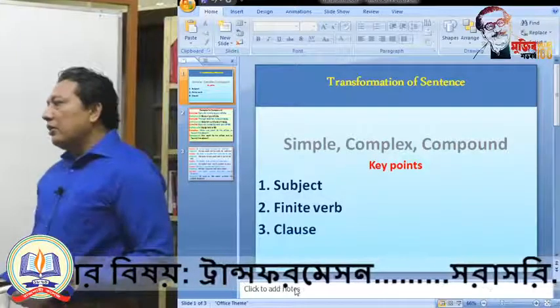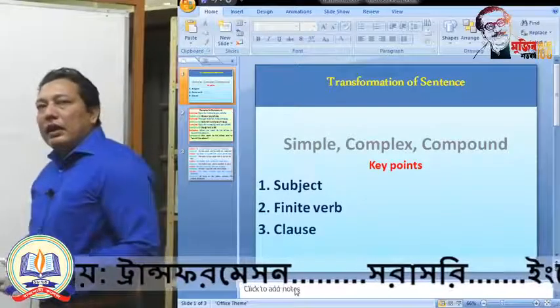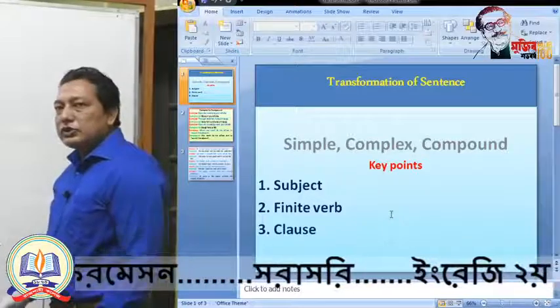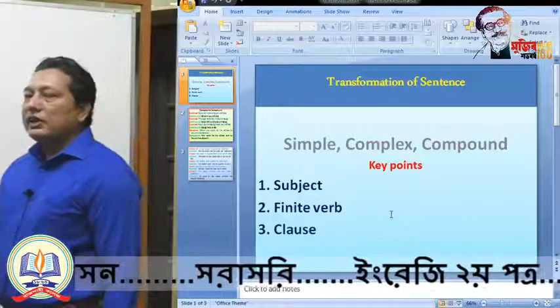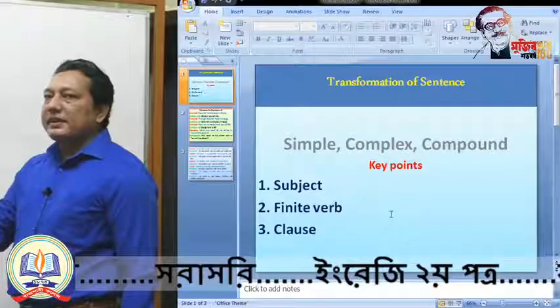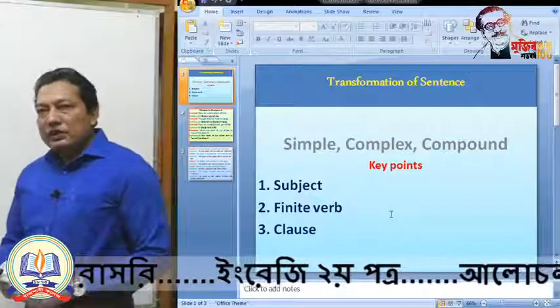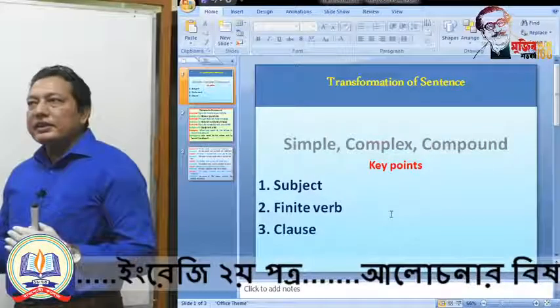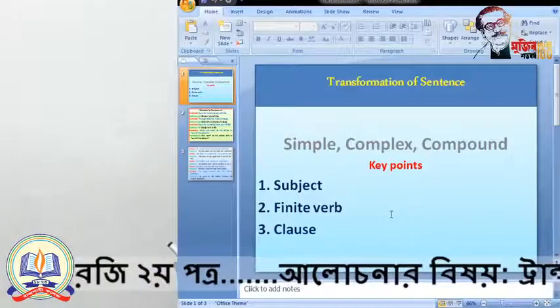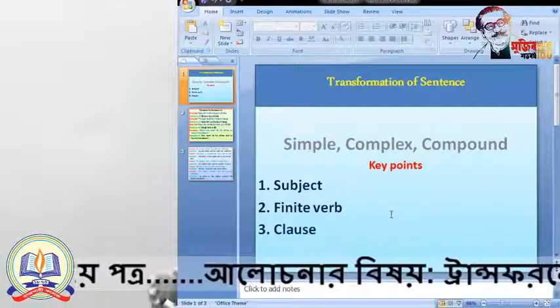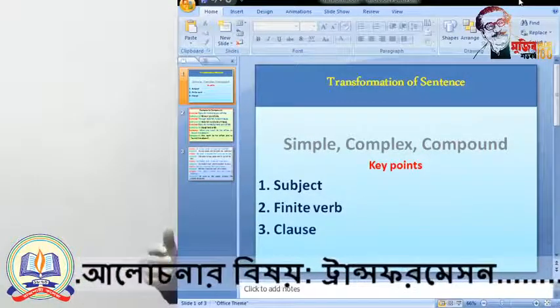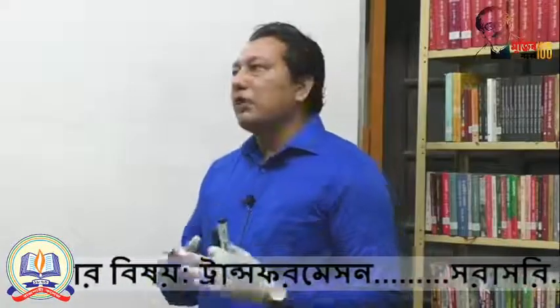In the last class we learned about transforming from simple to complex and complex to simple. Today I would like to focus on changing from compound to complex and complex to compound. In these two sentence types, you will get clauses connected with conjunctions — subordinating conjunctions in complex sentences, and coordinating conjunctions in compound sentences.